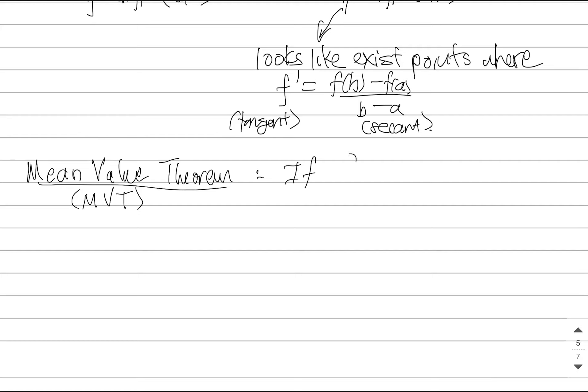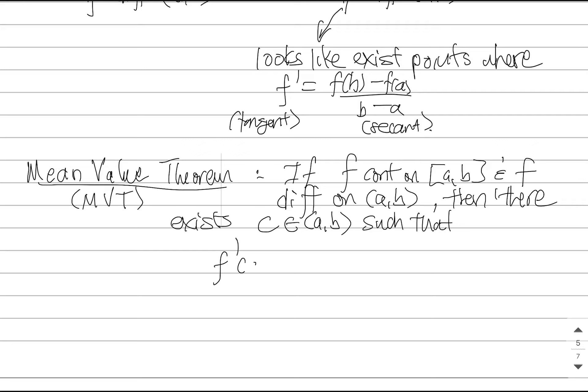If your function is continuous on the closed interval, just like before, and if the function is differentiable on an open interval, just like before, then there exists a point c somewhere in the open interval (a, b), just like before, such that the following conclusion is true. f prime of c is f(b) minus f(a) over b minus a.